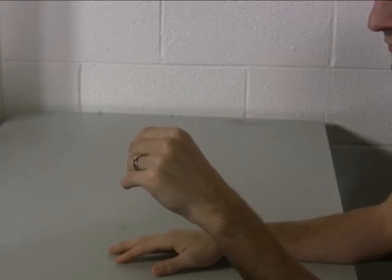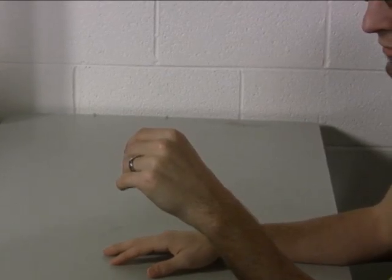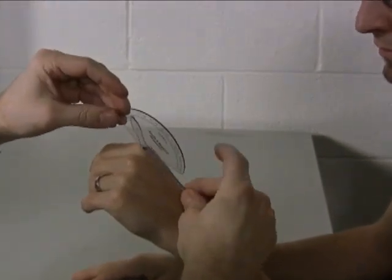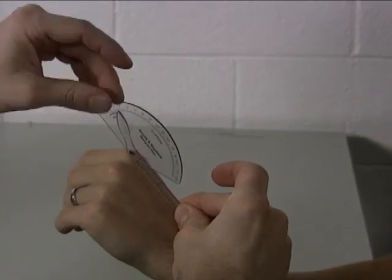To measure finger metacarpophalangeal joint range of motion, you're going to place the goniometer actually on its edge on the back of the hand.